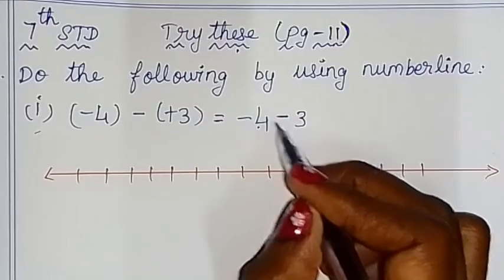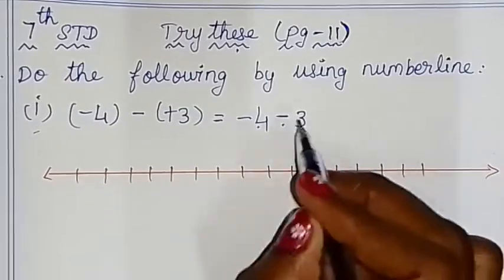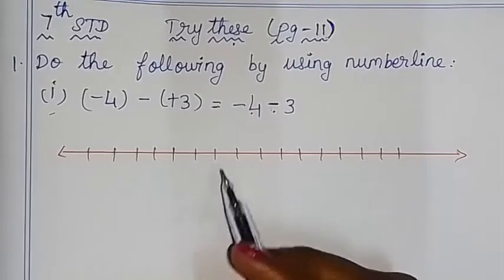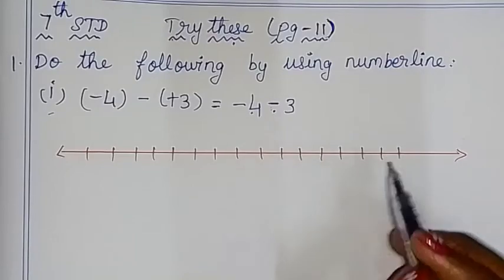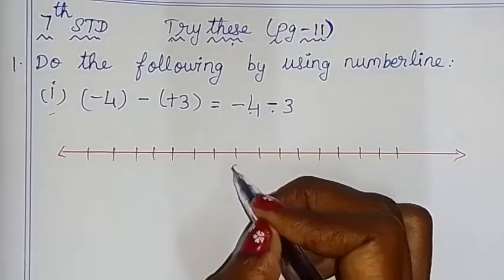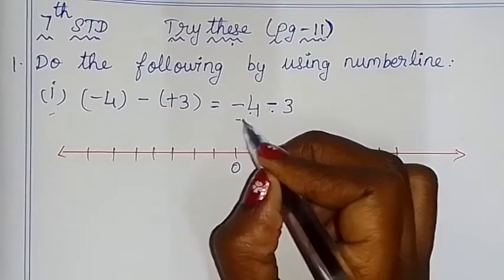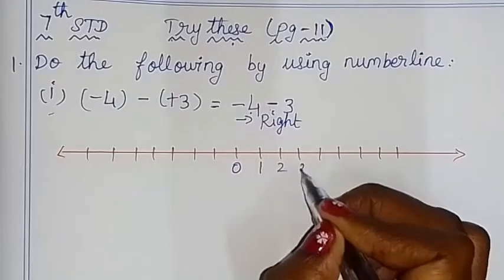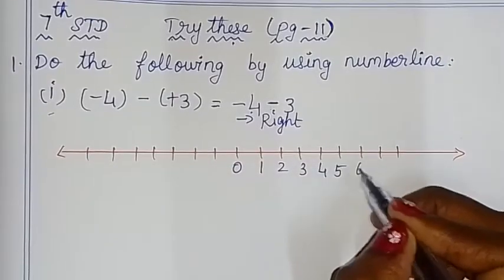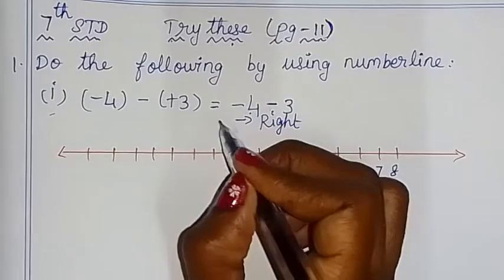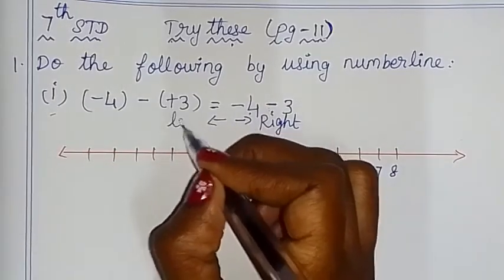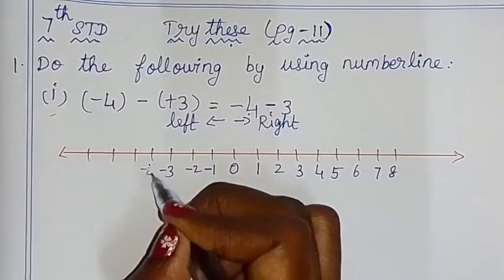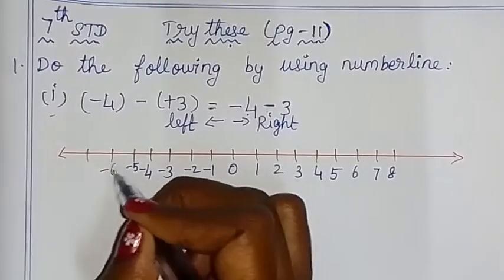This second symbol is left side. First, number line: how to count — middle is 0. Right side of 0 are positive numbers: 1, 2, 3, 4, 5, 6, 7, 8. Left side of 0 are negative numbers: minus 1, 2, 3, 4, 5, 6, 7.